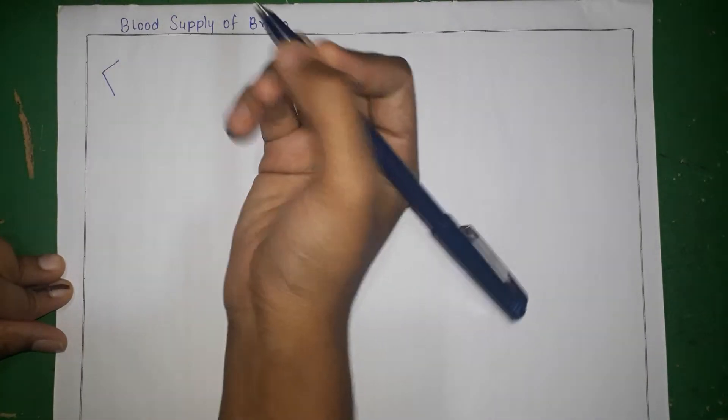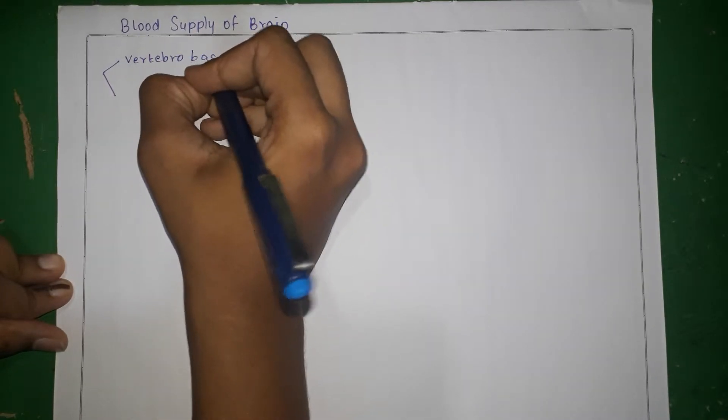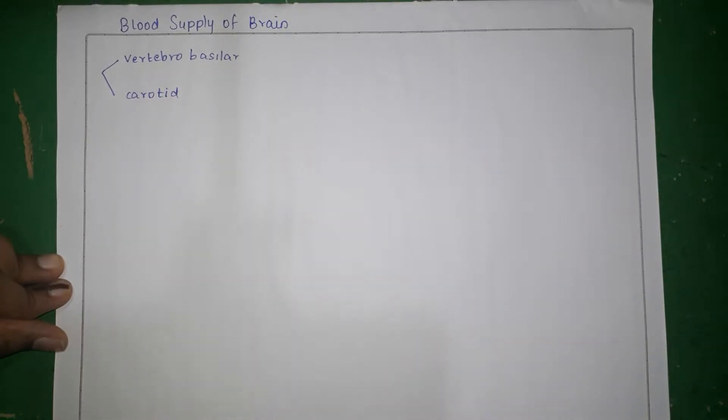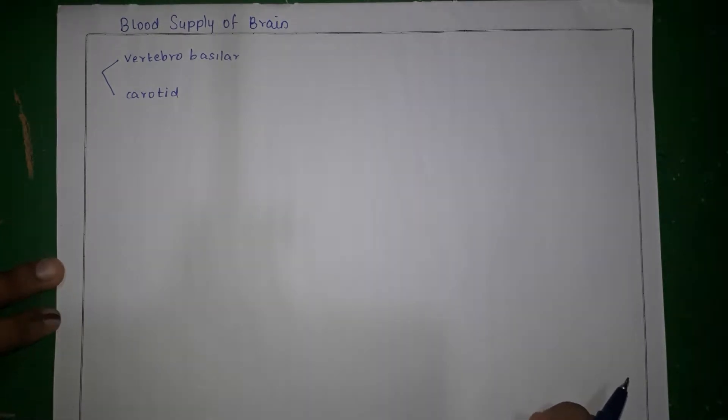In this video we're going to focus on the blood supply of the brain. The blood supply of the brain can be divided into two groups: the vertebrobasilar system and the carotid system. Here, carotid system refers to the internal carotid artery.